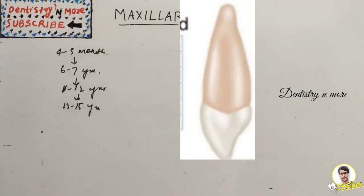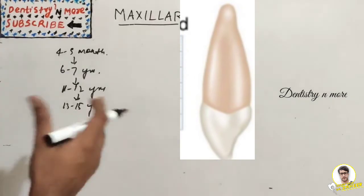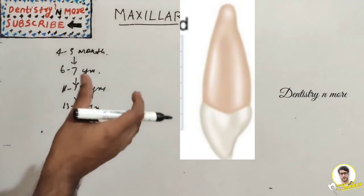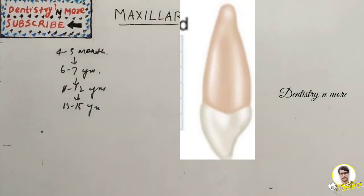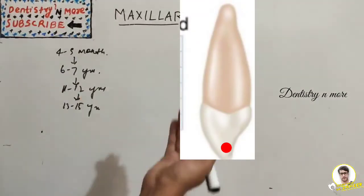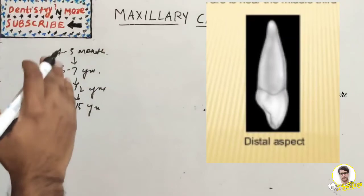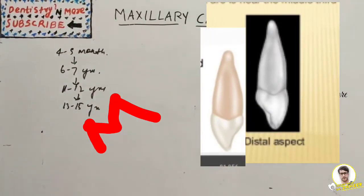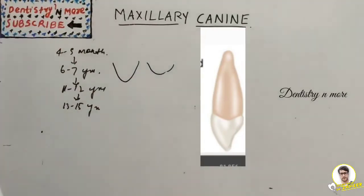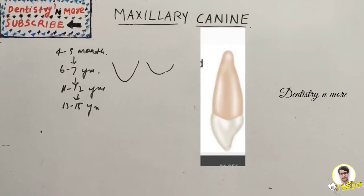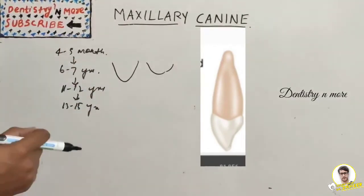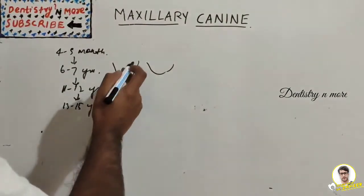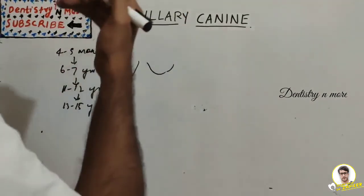From the mesial aspect, the canine looks similar but bulkier than the maxillary central incisor. The maxillary canine is the widest anterior tooth labiolingually. The cervical line curves widely toward the incisal, and the contact area is near the junction of the incisal and middle third. The distal aspect is almost the same as the mesial surface but with less cervical line curvature. The contact area on the distal side is located more cervically — in the middle third.